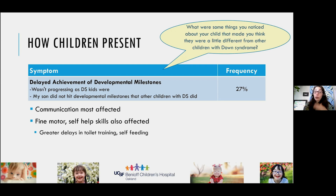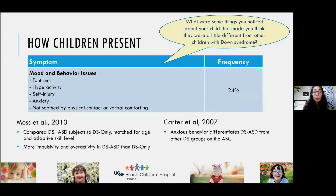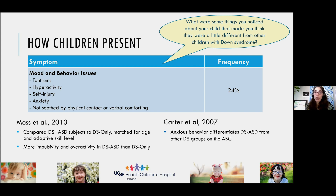Many parents noted overall delayed achievement of developmental milestones beyond other kids with Down syndrome only. I see this in communication but also in self-help skills, including greater delays in toilet training and self-feeding. A lot of parents reported mood and behavior issues including tantrums, hyperactivity, self-injury, and anxiety. When compared to individuals with Down syndrome only, there were much higher rates of ADHD, and on the aberrant behavior checklist, anxious behavior subscales significantly differentiated kids with a dual diagnosis from those with Down syndrome only.